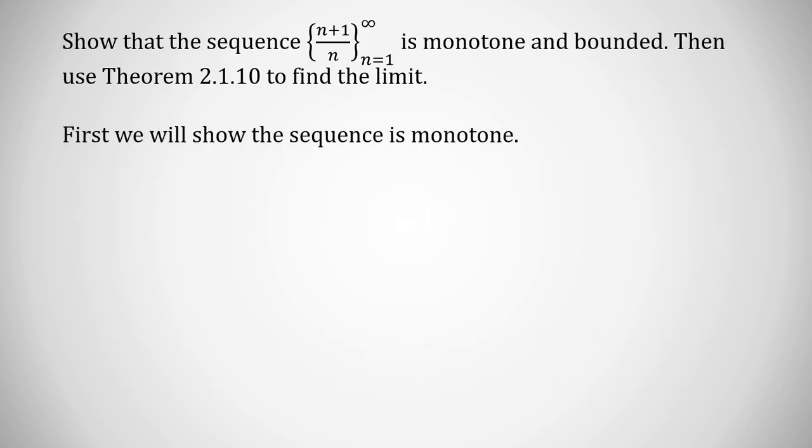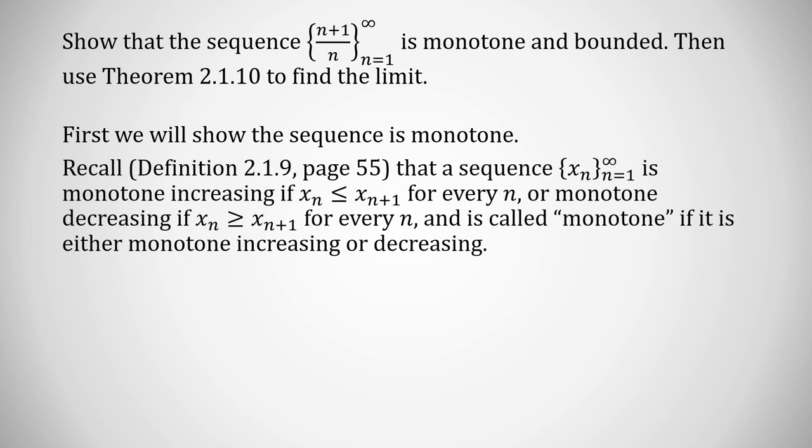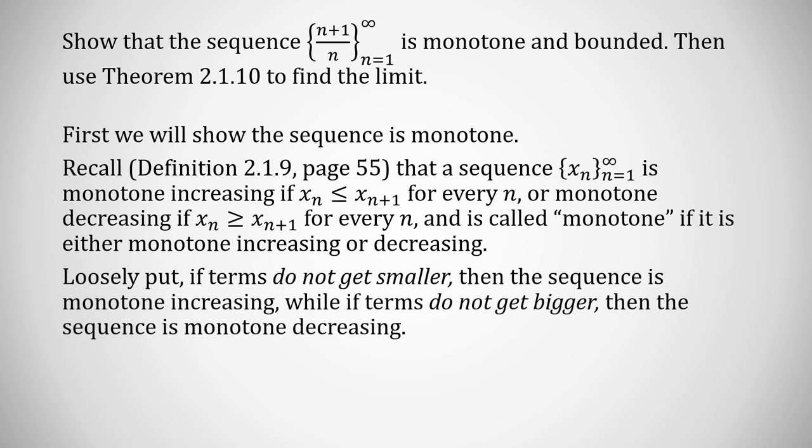The first thing we need to do is show that the sequence is monotone. From Definition 2.1.9 on page 55, a sequence is monotone increasing if x_n ≤ x_{n+1} — the next term is bigger than or equal to the one before it — or monotone decreasing if the reverse holds, x_{n+1} ≤ x_n, so every term is less than or equal to the one before it. It is called monotone if either condition holds.